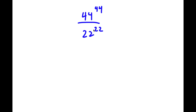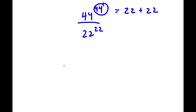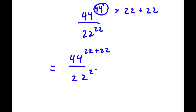In this problem, I have 44 to the power of 44 over 22 to the power of 22. To start, 44 here is the same thing as 22 plus 22. So now this is equal to 44 to the power of 22 plus 22 over 22 to the power of 22.